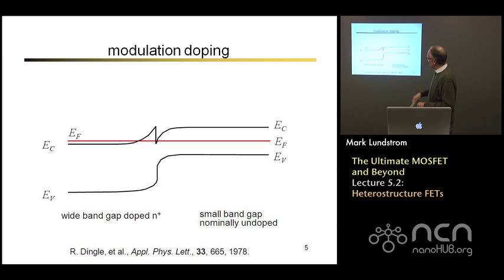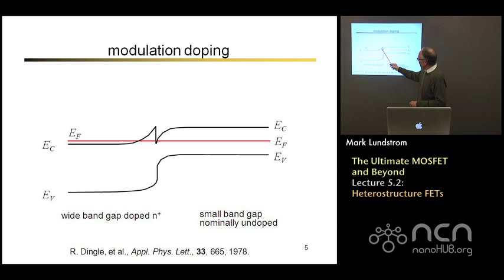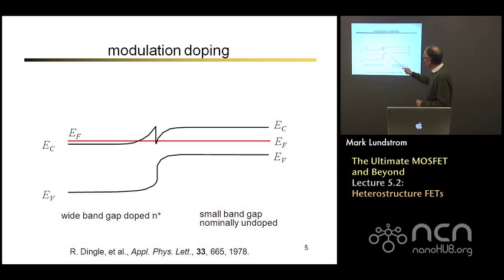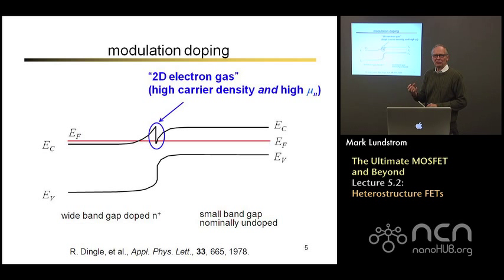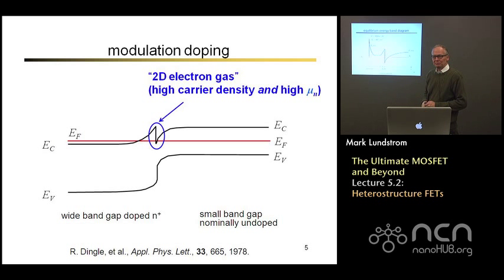This is what the overall energy band diagram looks like when you put the two together. We see depletion on the wide band gap side — lower electron density because the Fermi level is further from the conduction band, since electrons have spilled over into the smaller band gap side. There's a pile-up of electrons on the small band gap side from modulation doping. That becomes the channel of our transistor. People in this field call that a two-dimensional electron gas — it's just like a silicon inversion layer, which is also a two-dimensional electron gas.